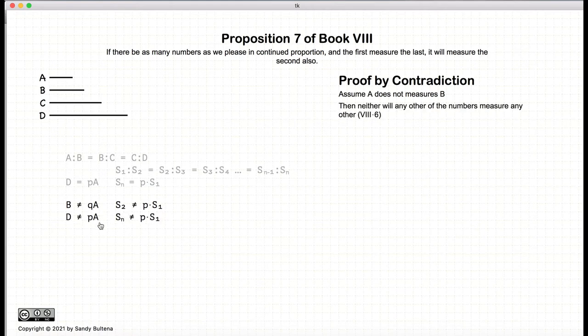And by the previous proposition, Proposition 6 of this book, if A does not measure B, then A does not measure D, or the first element does not measure the last element.